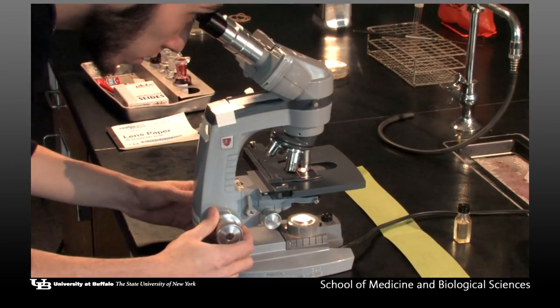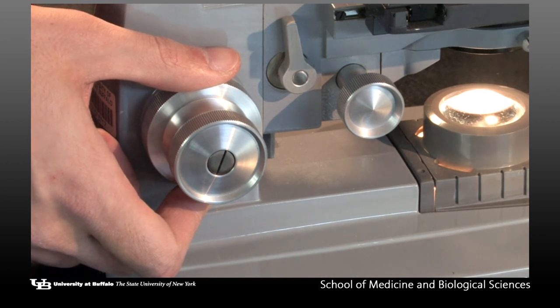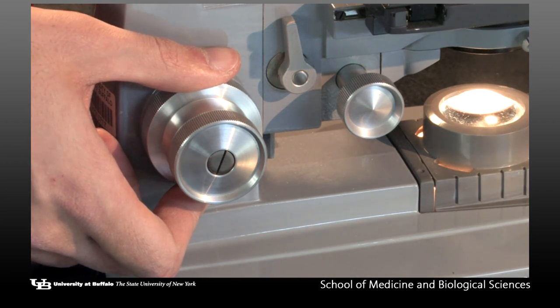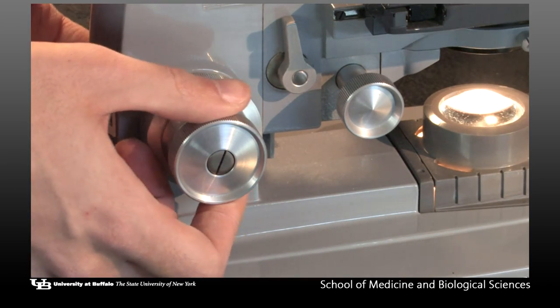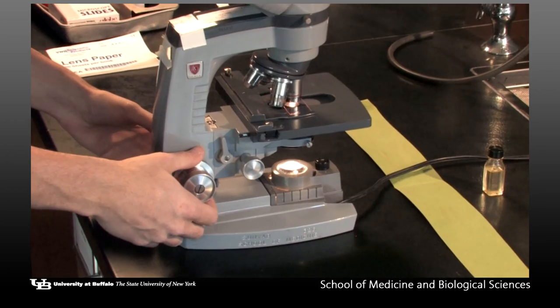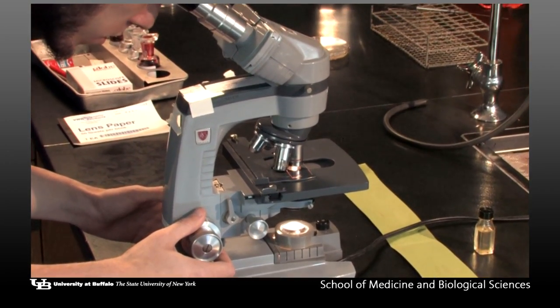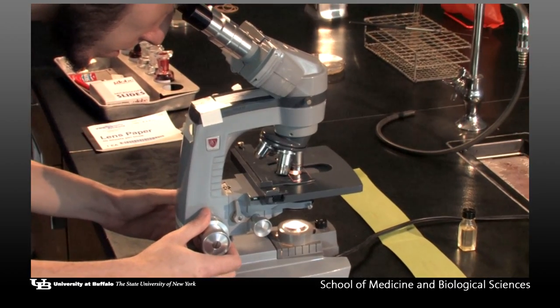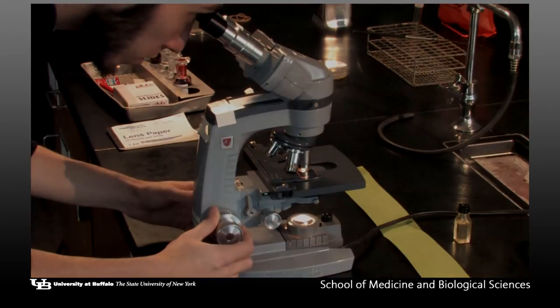Rotate the coarse focus knob in a clockwise direction towards the slide until you feel resistance. Continue this clockwise rotation with the fine focus knob. Next, turn the coarse focus knob counterclockwise while looking through the ocular lens until you see a flash of light, then fine adjust.